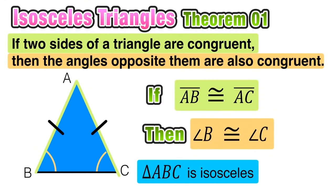Triangle ABC is isosceles — take a really good look at this image, because this is a classic representation of your typical isosceles triangle, where the two sides are congruent and the two base angles opposite those sides are also congruent. Keeping this relationship in mind will help us better identify isosceles triangles in the future.